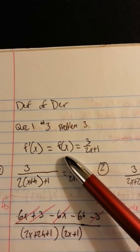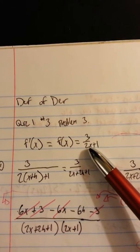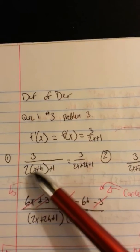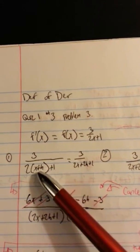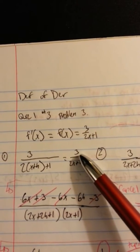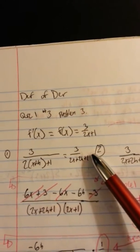So the first step that we're going to do is replace wherever there is an x here with x plus h. So we're going to take 3 over 2 times x plus h plus 1. And then we distribute this out, equals 3 over 2x plus 2h plus 1. That's step number 1. Very easy.